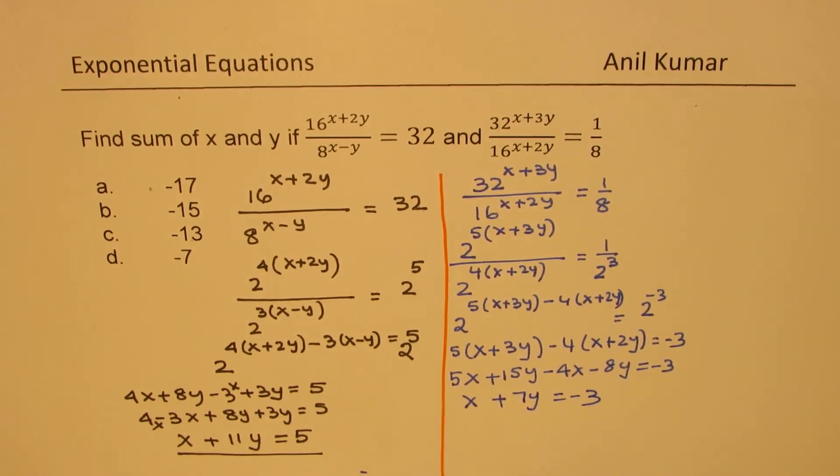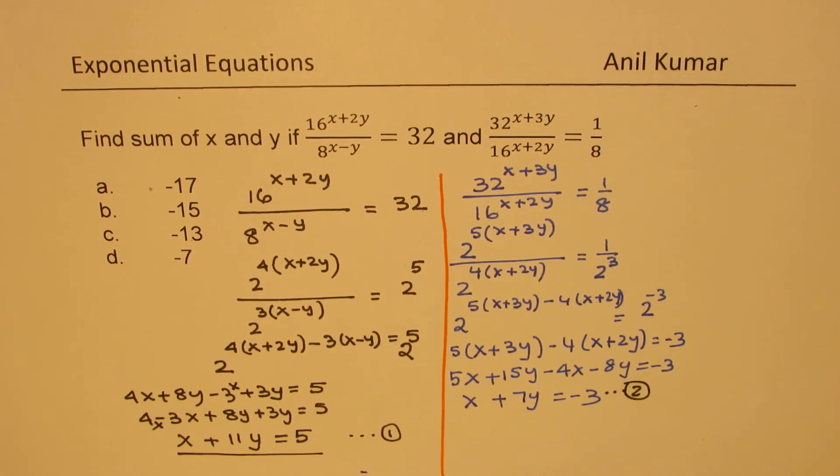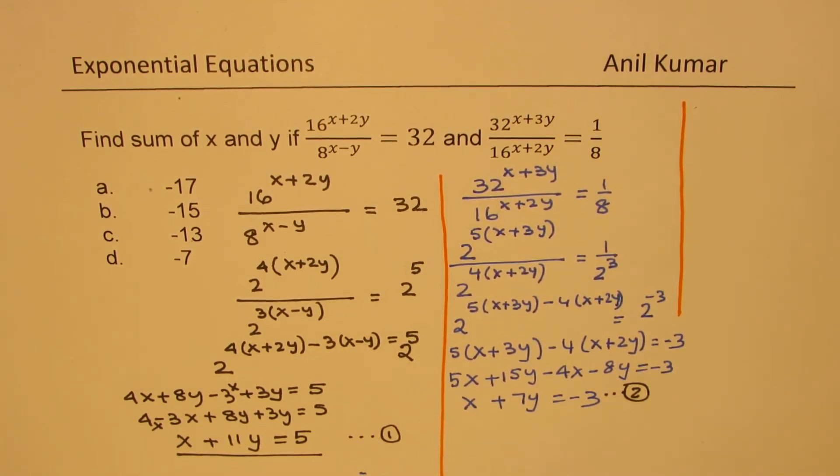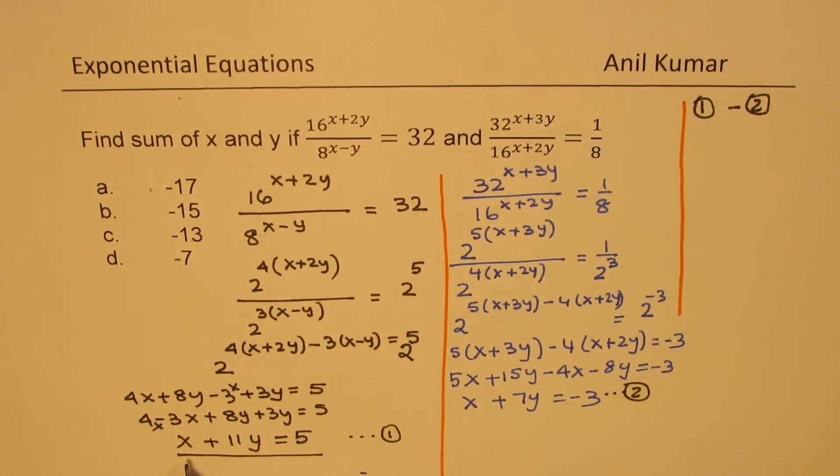So these two equations, equation 1 and equation 2. Now from these equations we can find the value of x and y. So if I subtract one from the other, if I do equation 1 take away equation 2, x and x will cancel.